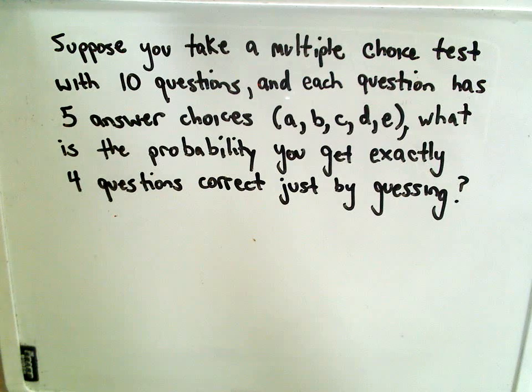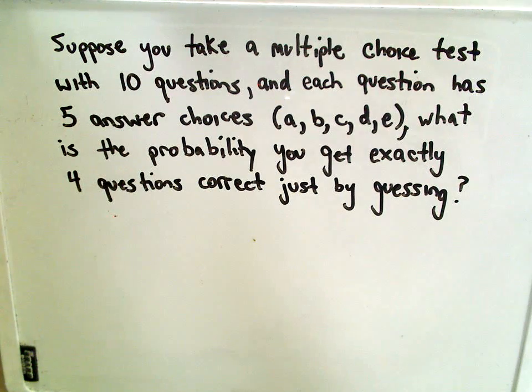You're going to take a multiple choice test that has ten questions on it and each question is going to have five answer choices, A, B, C, D, or E. And we're going to calculate the probability that you get exactly four questions correct just by guessing.